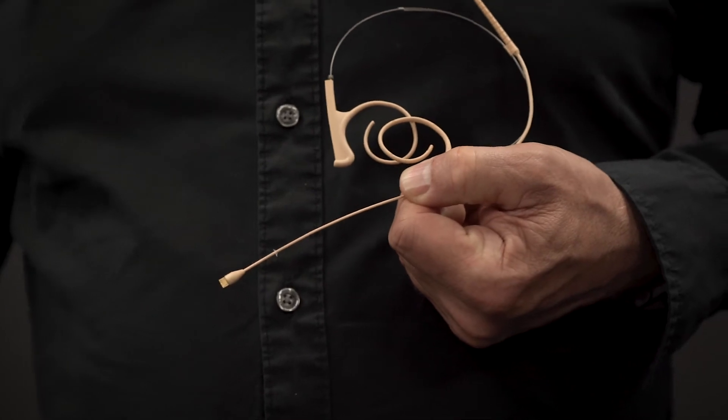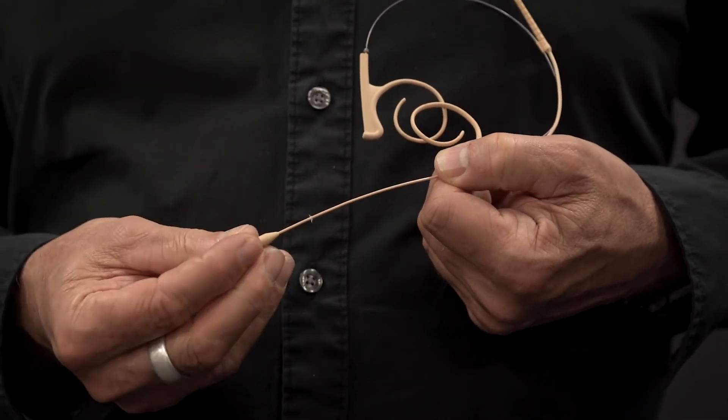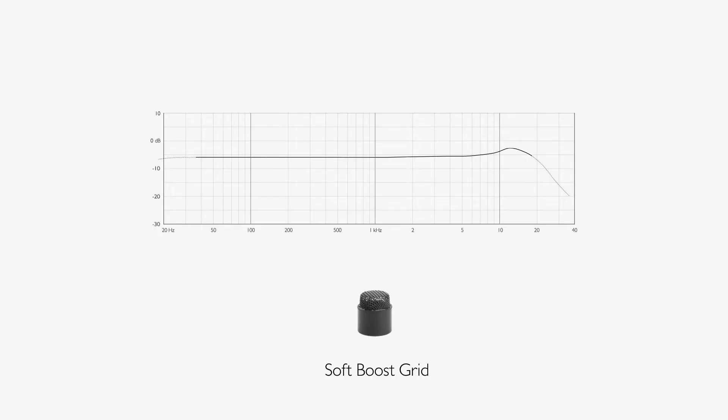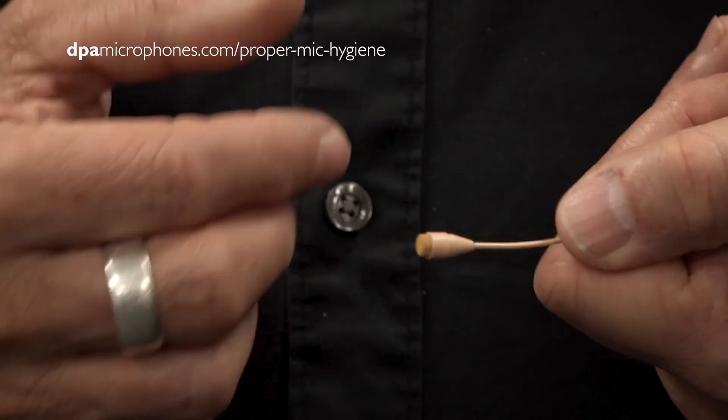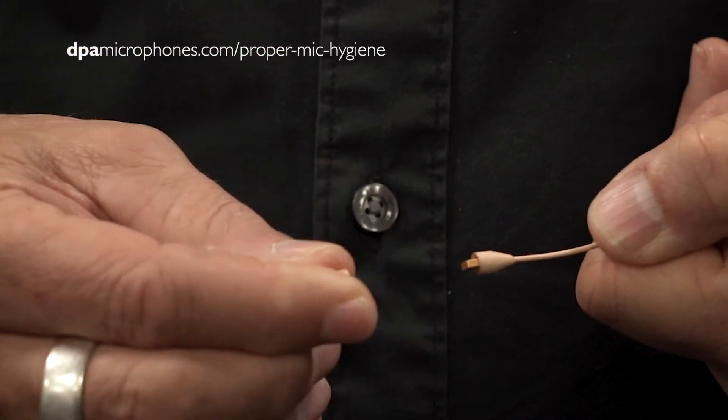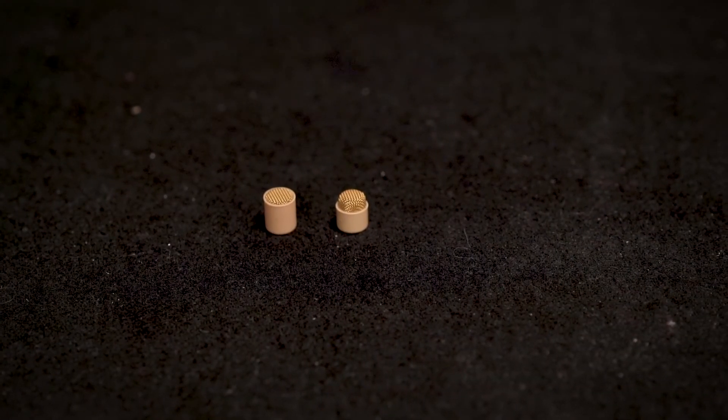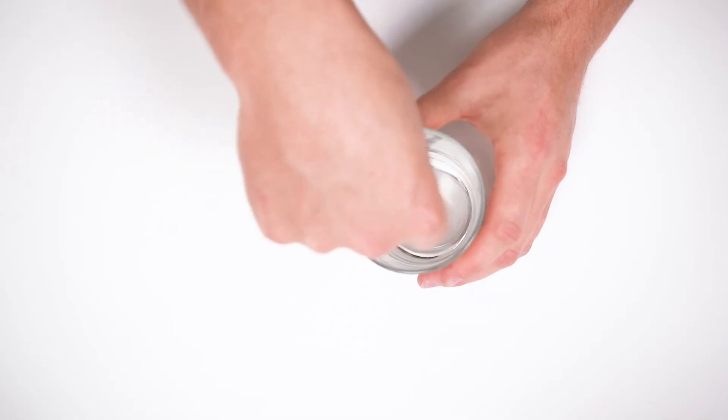The headset is premounted with the soft boost grid, but if you need an extra little frequency boost, you can add the high boost cap instead. Both grids are exchangeable and rinsable. Remove the grid and wash it separately before rinsing the microphone in demineralized water.